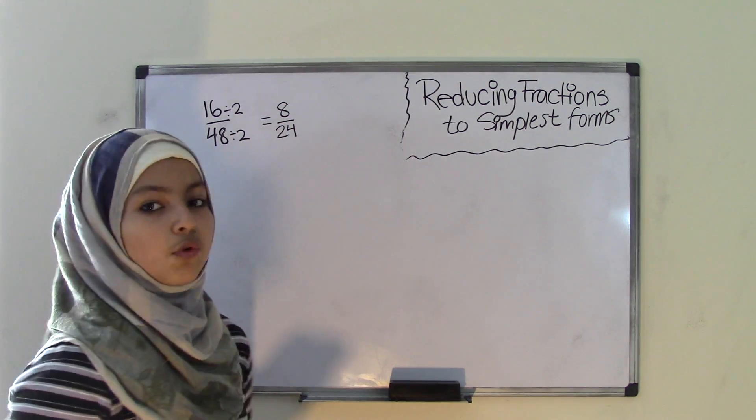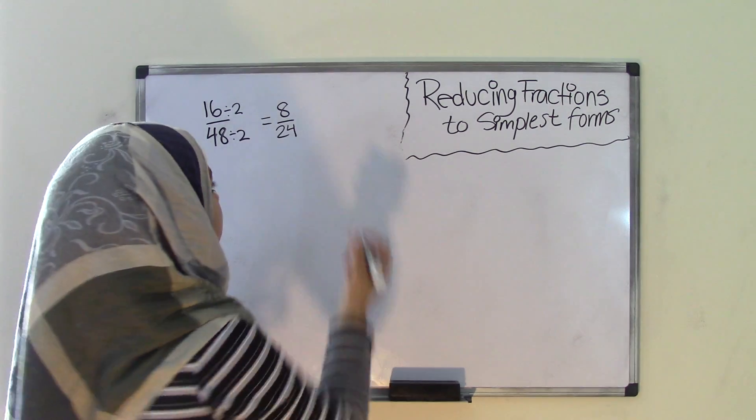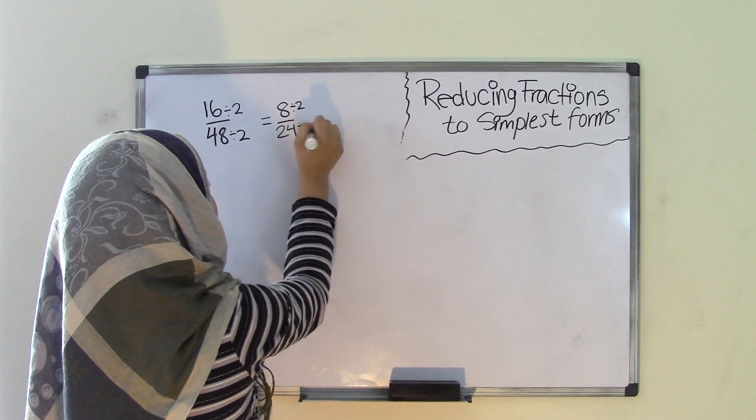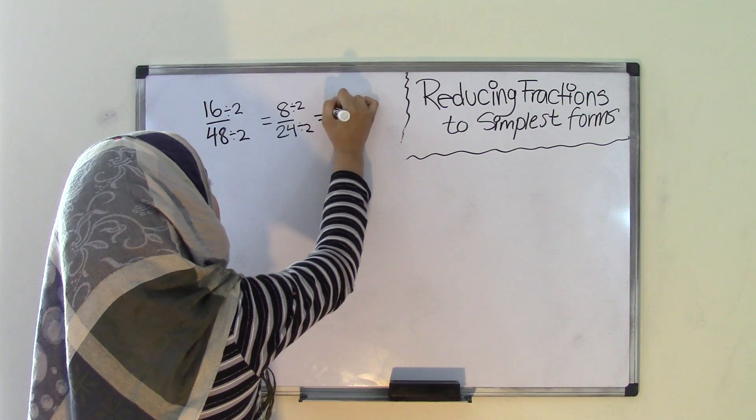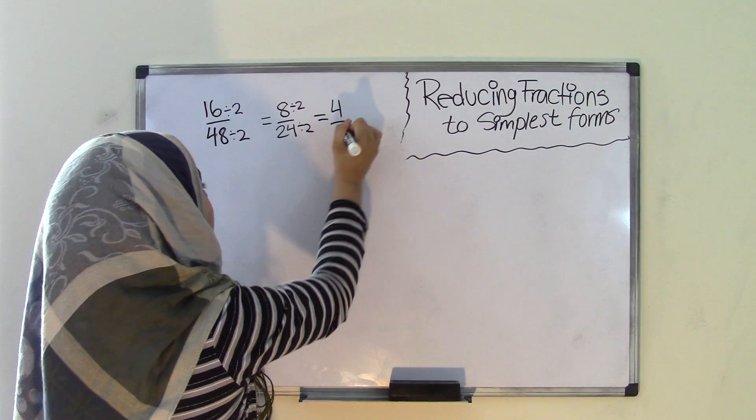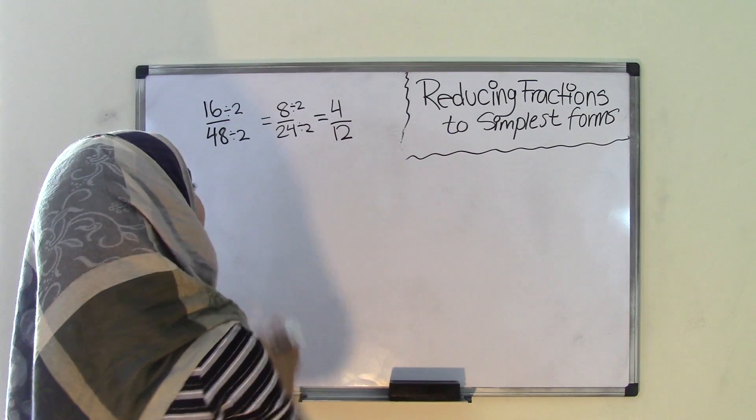Now we have 8 over 24. We can do this further by dividing by 2. So 8 divided by 2 and 24 divided by 2. 8 divided by 2 equals 4 and 24 divided by 2 equals 12. So now we get 4 over 12.